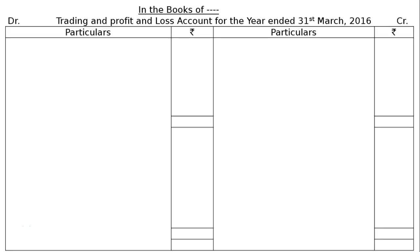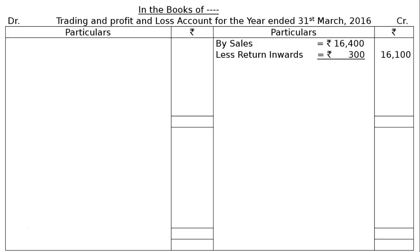In the books of the business — Trading and Profit and Loss Account for the year ended 31st March 2016. The owner's name is not given. On the credit side of the trading account: sales rupees 16,400 less return inwards rupees 300, giving rupees 16,100 in the final column. Adjustment item one — closing stock rupees 1,450 — will be shown on the credit side of the trading account and as a current asset in the balance sheet.